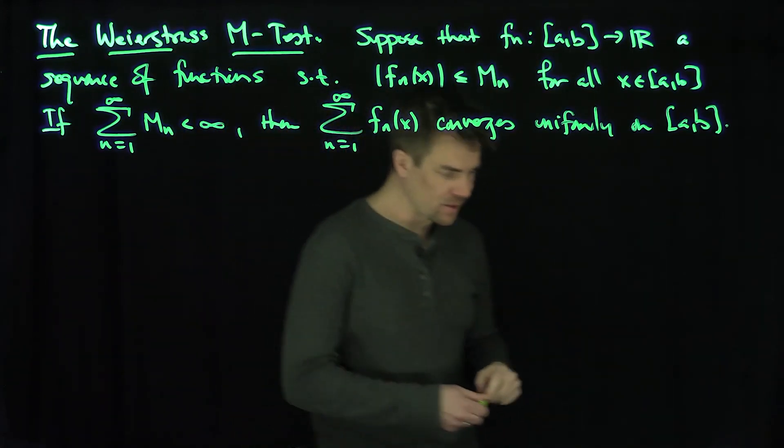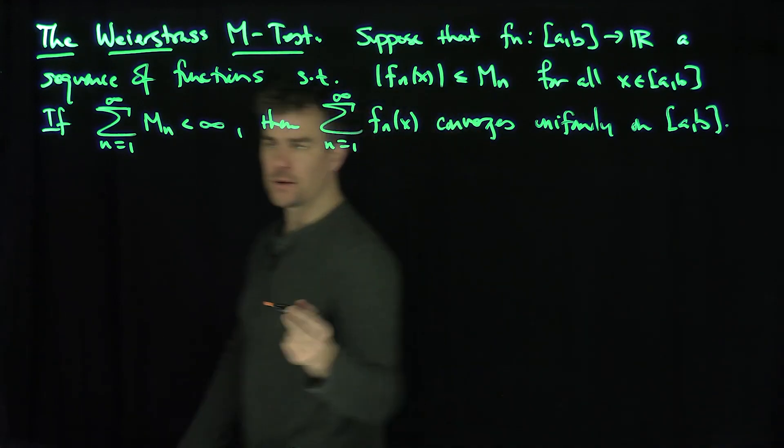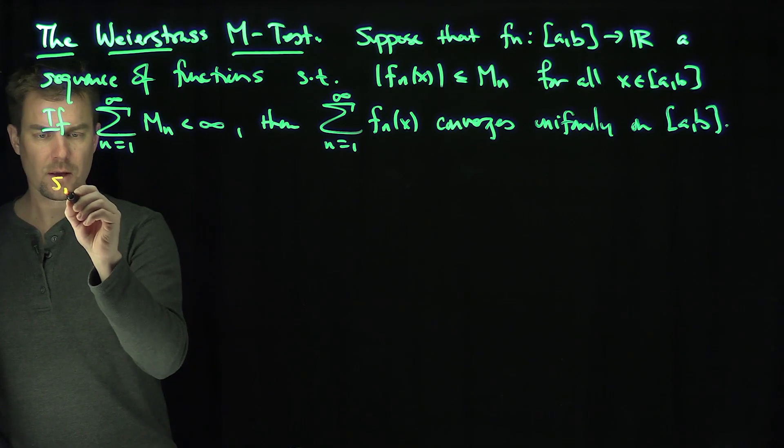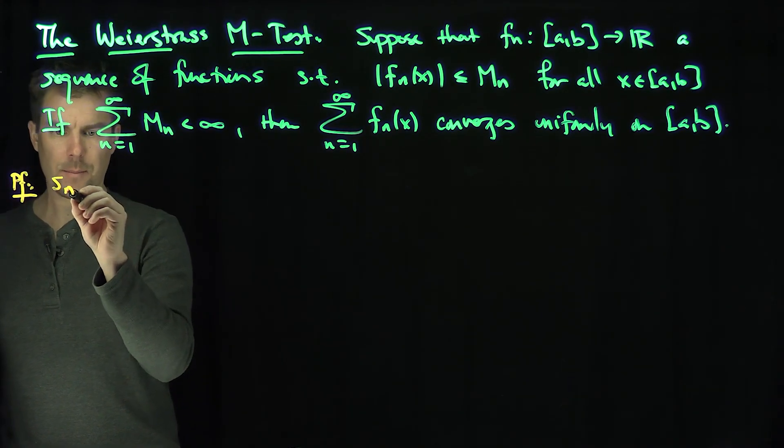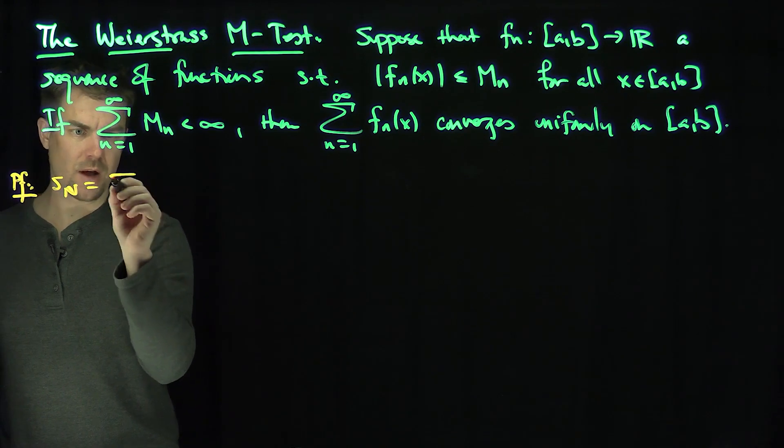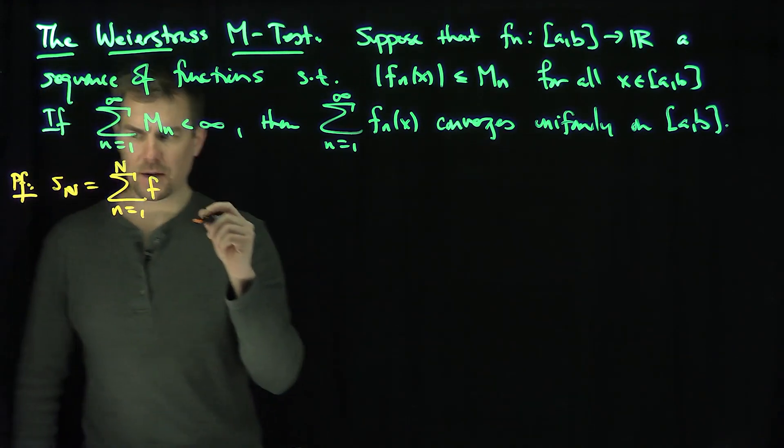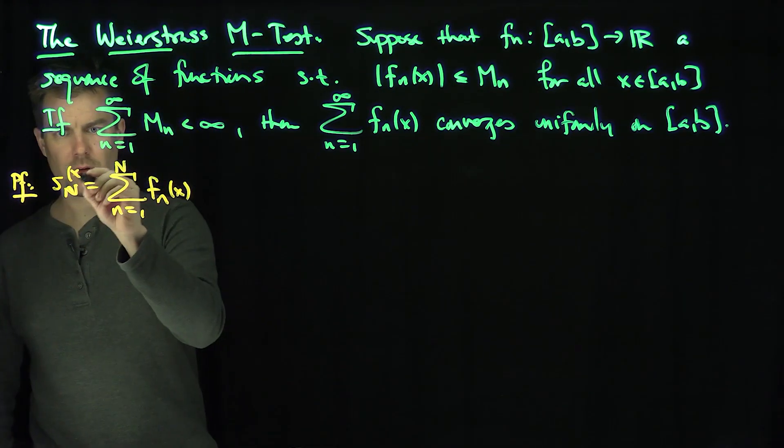Now this is very useful. The proof is actually straightforward, so let's do it. What we're going to do is consider these partial sums. Here's the proof: let capital S_n be the sum from little n goes from 1 to capital N of f_n(x).